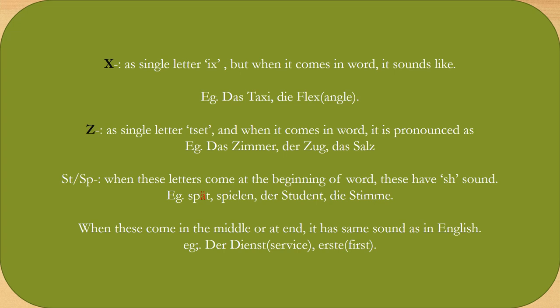Now we will talk about ST and SP. When these letters come at the beginning of a word, they have an SH sound. For example: spät, spielen, Student, Stimme. When these come in the middle or at the end of a word, they have the same sound as in English. For example: Dienst, erste.